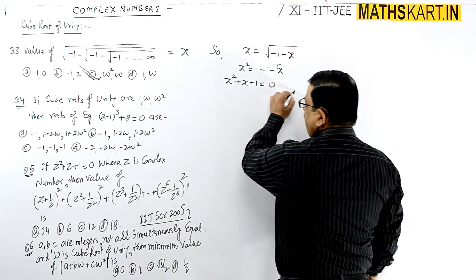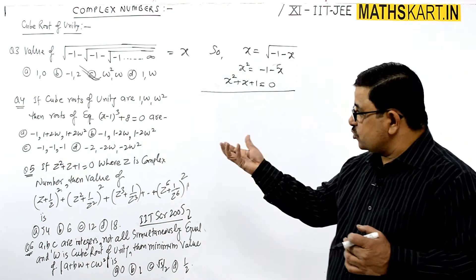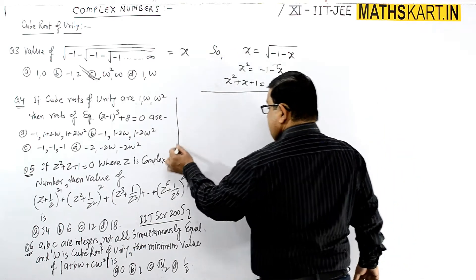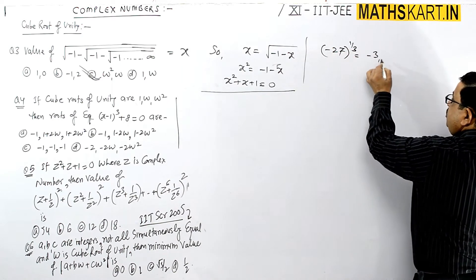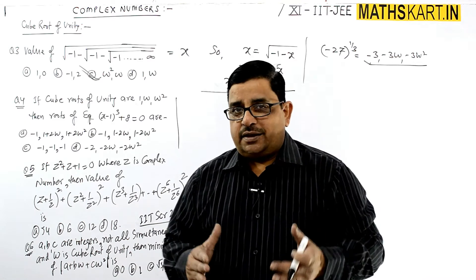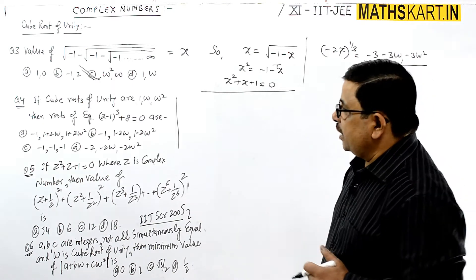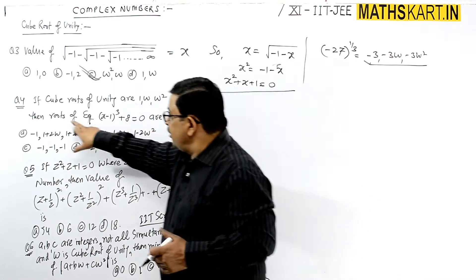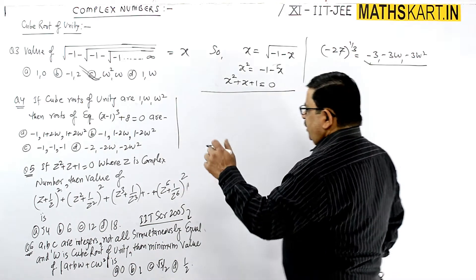Question number four: if cube root of unity are one, omega, and omega square, then roots of the equation - the equation is given in this form and we have to find out the solution. This is question number four.